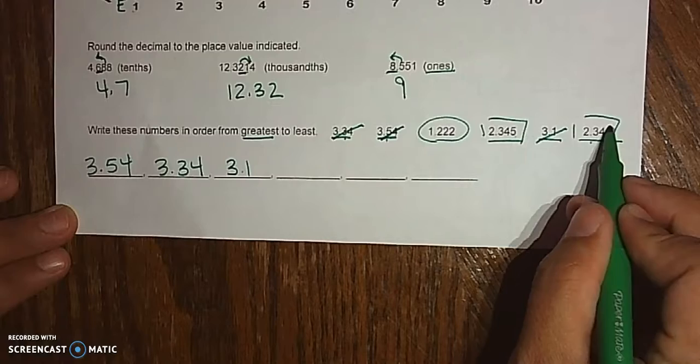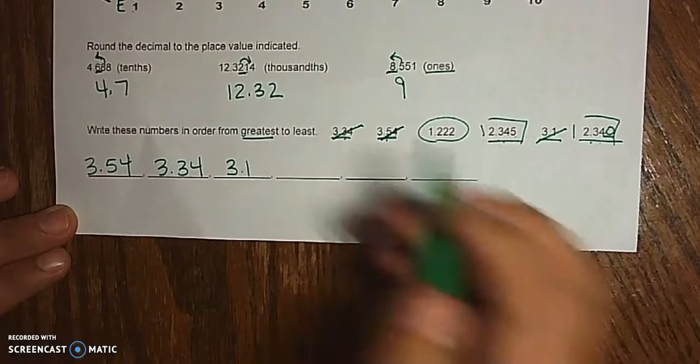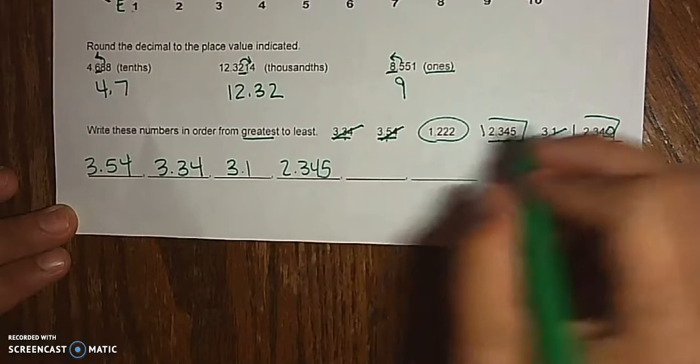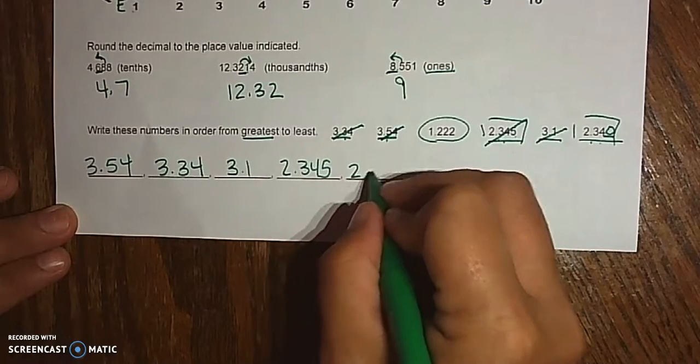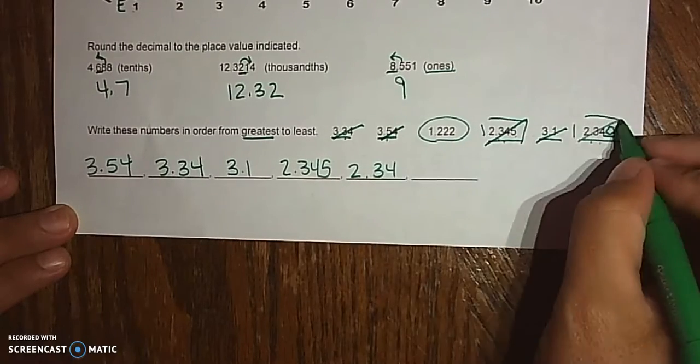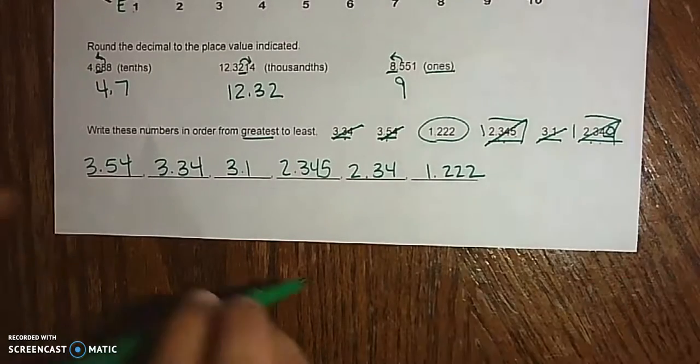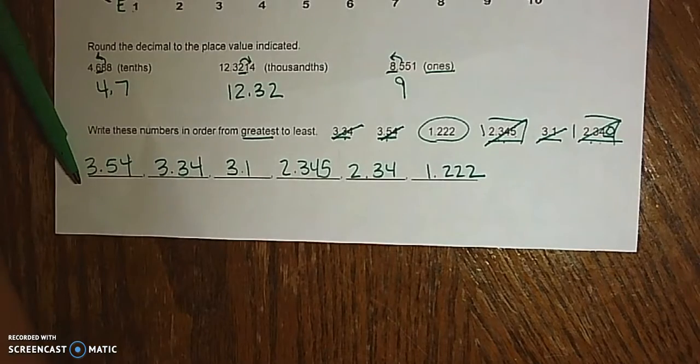Which means this is actually a 0, this one's higher. 2.345, which leaves us with 2.34, and then the only one left, 1.222. Make sure these get put into your notebooks. Let's hear them. We'll take a look. We'll get back here.